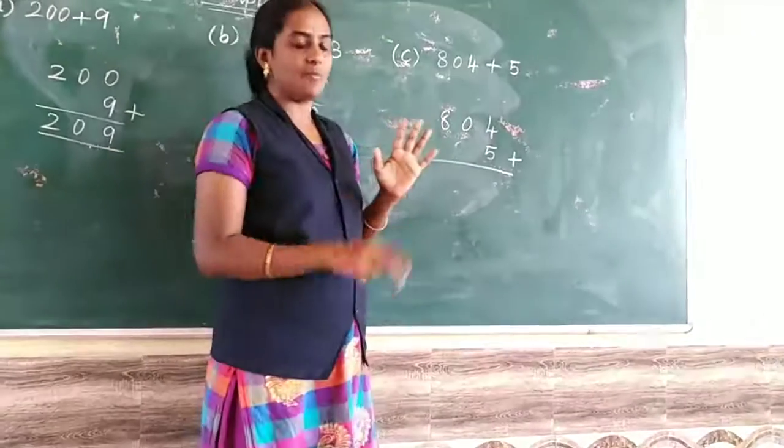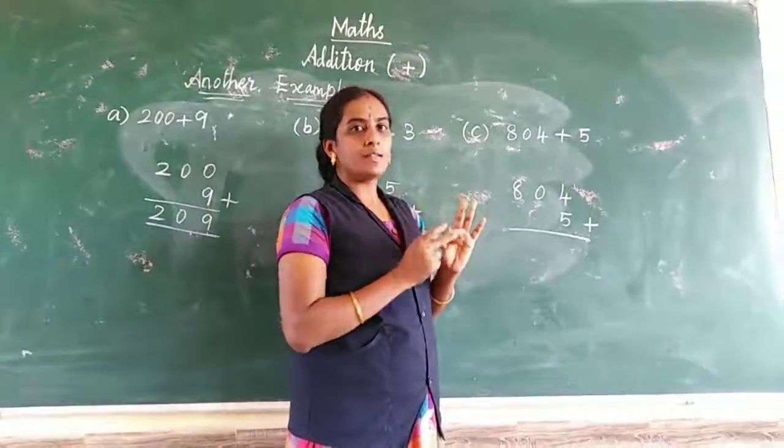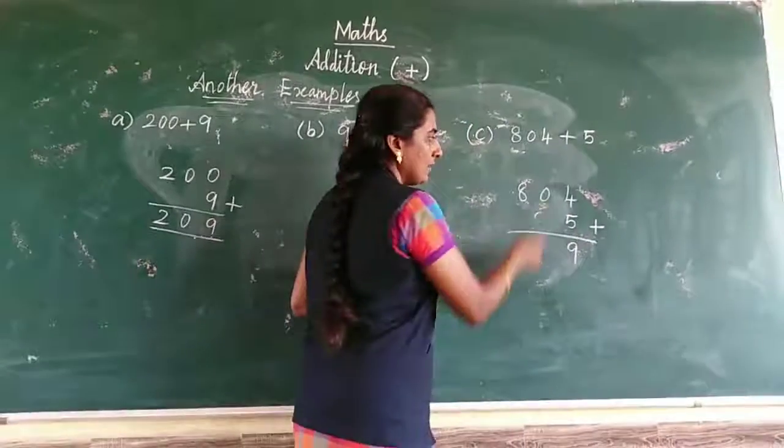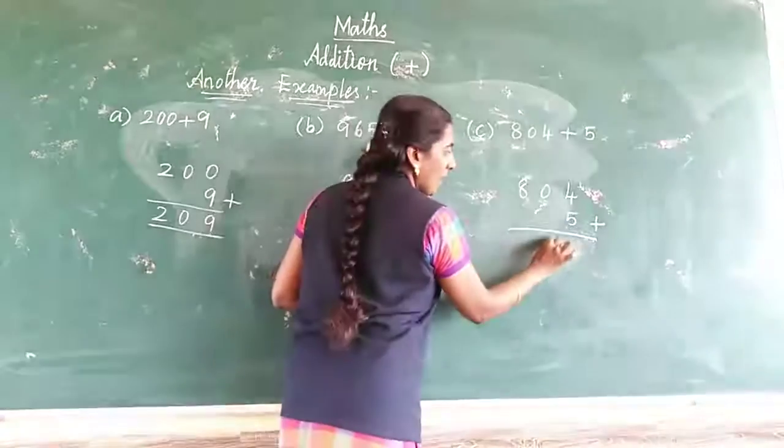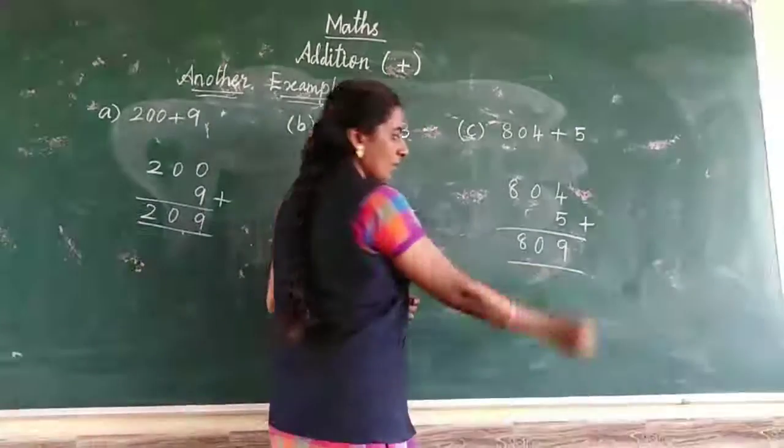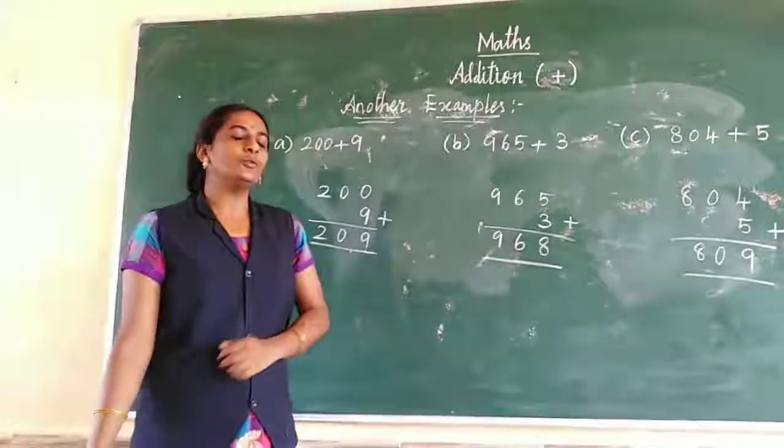What comes after 4? 5, 6, 7, 8, 9. Write down 9. The tens place is 0, so write it down. The hundreds place is 8, so write it down. Okay friends, thank you.